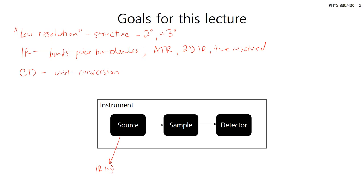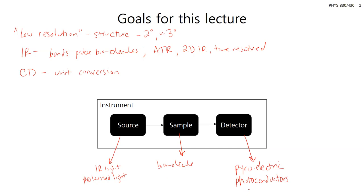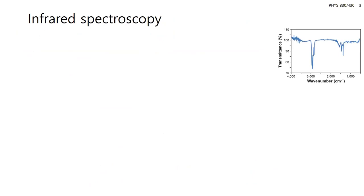For today's instruments, the source is going to be IR light — these are still spectroscopy techniques or polarized light. Our samples are mostly going to be on the biomolecule/biopolymer side. IR is sometimes used with cellular tissues but not as frequently. The detectors have to work in the infrared region, so these are pyroelectric detectors, photoconductors, or detectors that exploit the property that infrared light produces heat. Thermoelectric detectors can also be used.